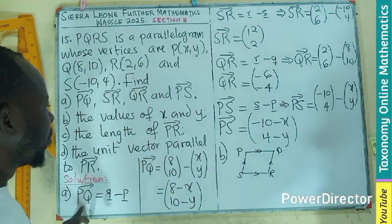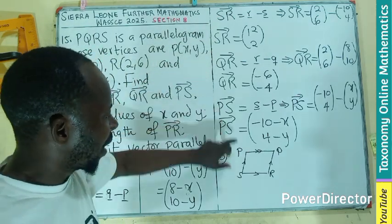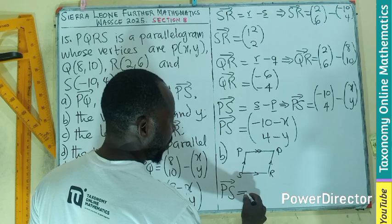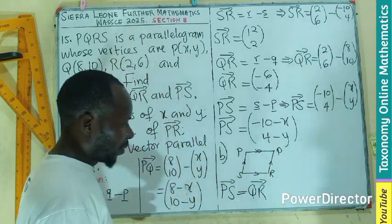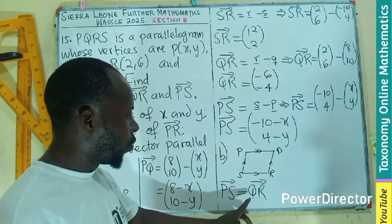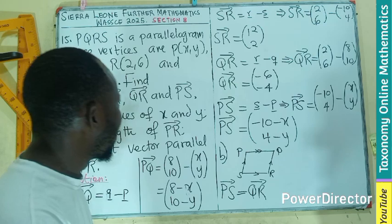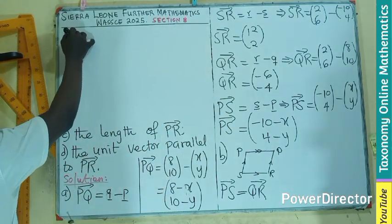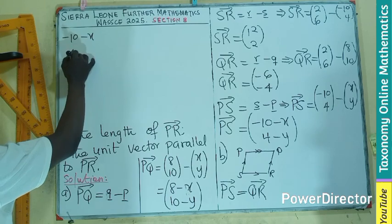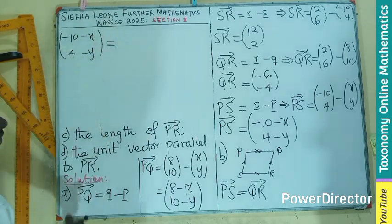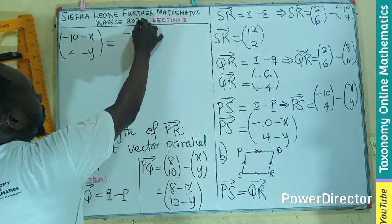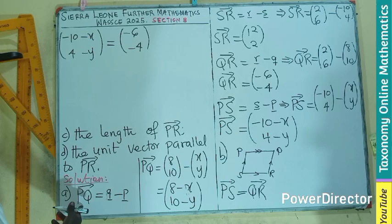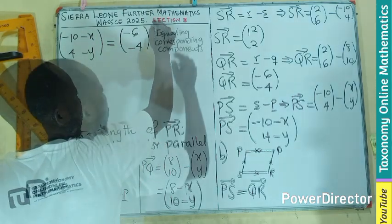Do I have PS in my calculation? I have PS. We have QR, I have QR. So I can say that PS as a vector is equal to QR as a vector. What I have for PS is this, what I have for QR is this. So I put them together. I can say that PS, which is (-10 - X, 4 - Y), is the same as QR, which is (-6, -4).